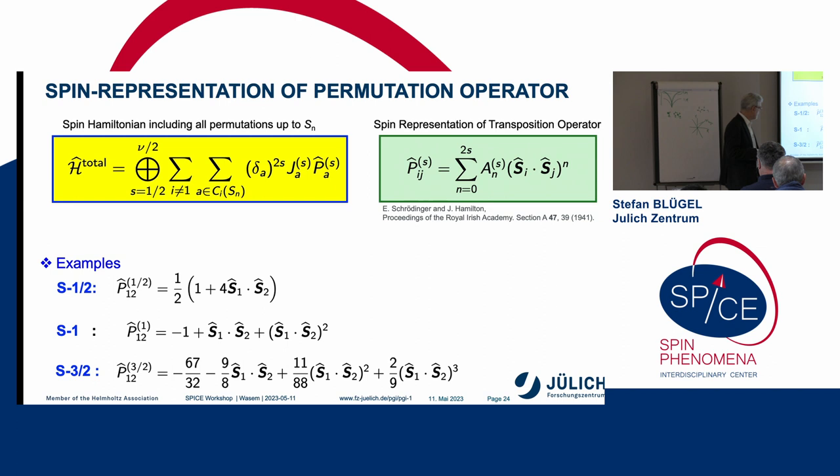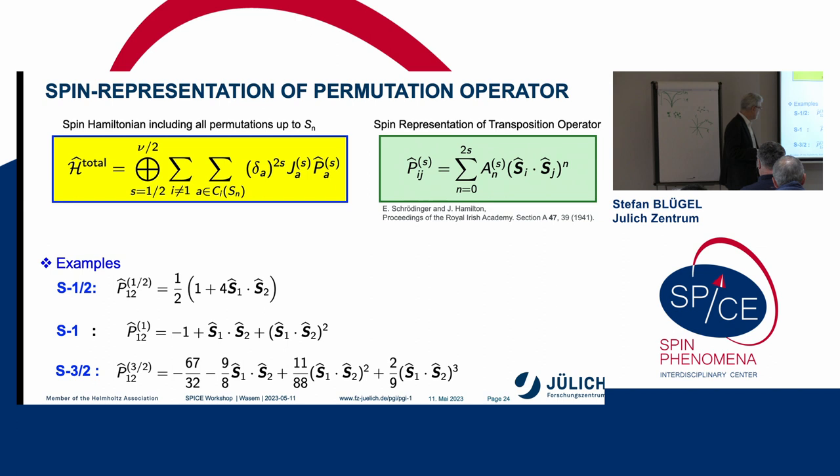For spin-1, the transposition operator is a sum of Heisenberg plus bi-quadratic. For spin-3/2, you go up to the bicubic term. And if you remember now that any permutation can be represented by this P12, by this transposition, then that is basically, on this transparency, all that you need to know. And the rest you can do yourself as a homework problem for your particular spin system. You have to decide what is your spin representation, and you have to decide how far you want to go in your Hamiltonian. That's all. That is the end of my talk.